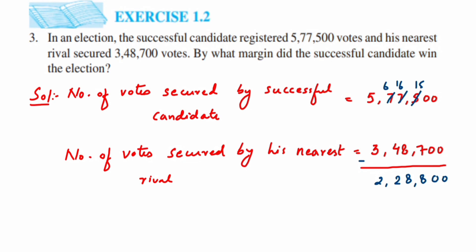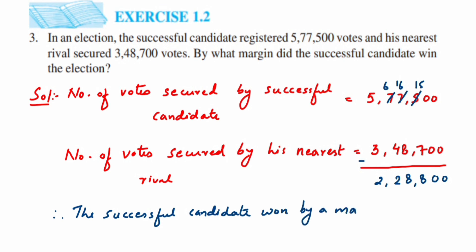Therefore the successful candidate won by a margin of 2,28,800 votes. This was a simple question — the only thing is you have to subtract and understand the question. I hope it's clear. In case you have any questions or doubts, you can drop a comment below. Thank you so much for watching.